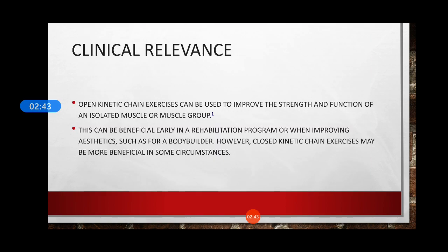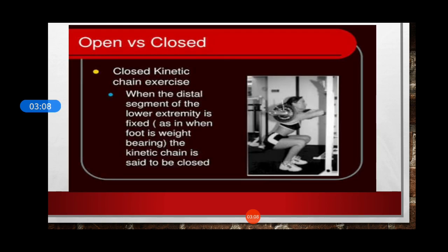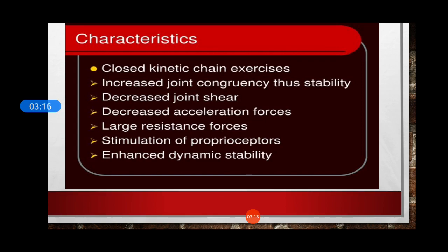Open kinetic chain exercises can be used to improve the strength and function of an isolated muscle or group of muscles. This can be beneficial in the early stages of a rehabilitation program or when improving aesthetics, such as for a bodybuilder. However, closed kinetic chain exercises may be more beneficial in some circumstances. Closed kinematic chain is when the distal segment of the extremity is fixed. Here there is increased joint congruency, thus stability plays an important role. There is decreased joint shear forces, decreased acceleration forces, and large resistance forces. The closed kinematic chain plays an important role in stimulation of proprioceptors.